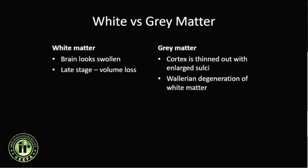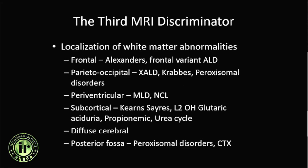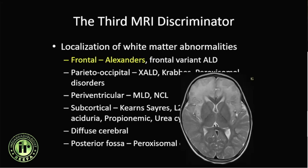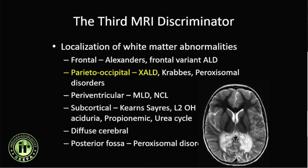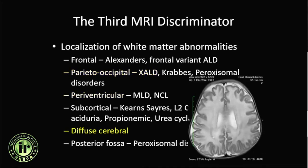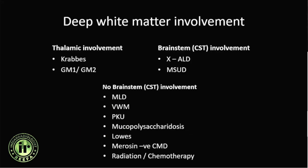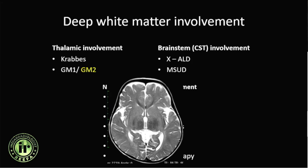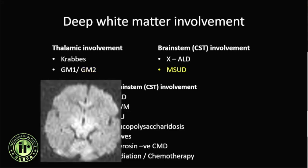The third MRI discriminator is where the white matter findings are typically located. Although bilaterally symmetric, they may be predominantly frontal in Alexander's disease, parieto-occipital in adrenoleukodystrophy, periventricular in MLD, subcortical or diffuse cerebral in Canavan's disease, or involving the posterior fossa. Deep white matter involvement can include the thalamus or brainstem.